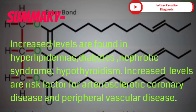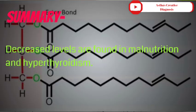Increased levels are found in hyperlipidemias, diabetes, nephrotic syndrome, and hypothyroidism. Increased levels are a risk factor for arteriosclerotic coronary disease and peripheral vascular disease. Decreased levels are found in malnutrition and hyperthyroidism.